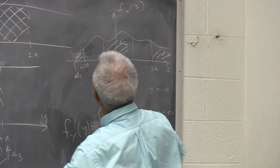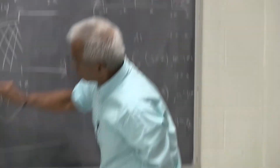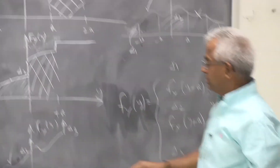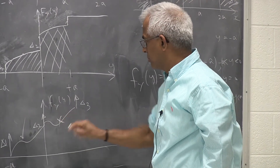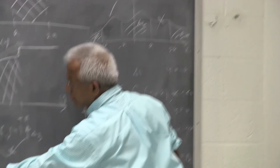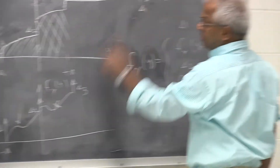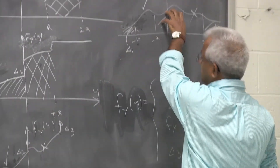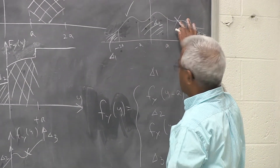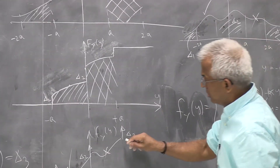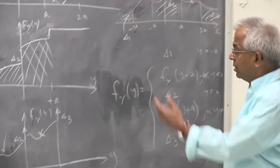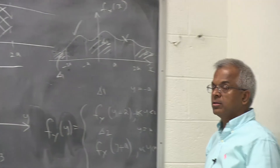So everything is accounted for. This piece comes and sits here, and this piece is here — accounted through this one. This area is accounted through delta 2, this impulse. The curve is accounted here, and then another impulse delta 3.